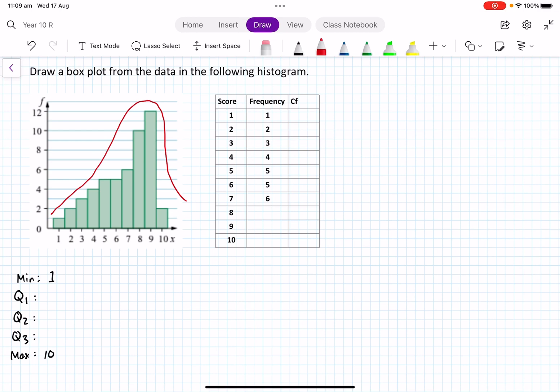You got a frequency histogram, so that's what this is, and we need to fill in the table. I've done the first few scores already. There's one score of one, two scores of two, three scores of three, four fours, five fives, five sixes, six sevens.